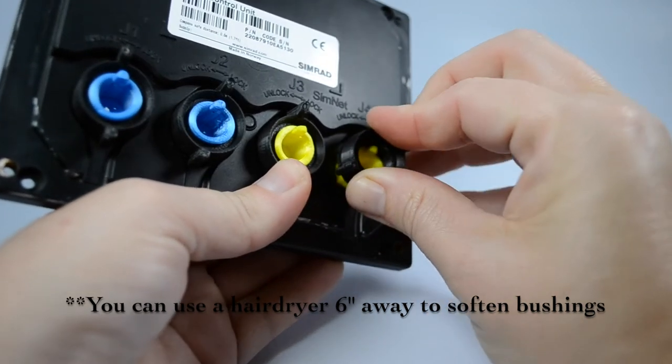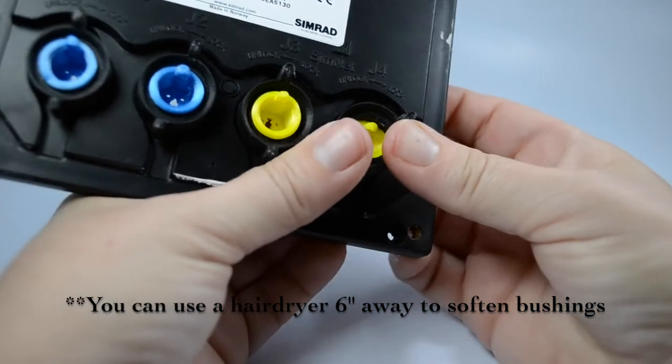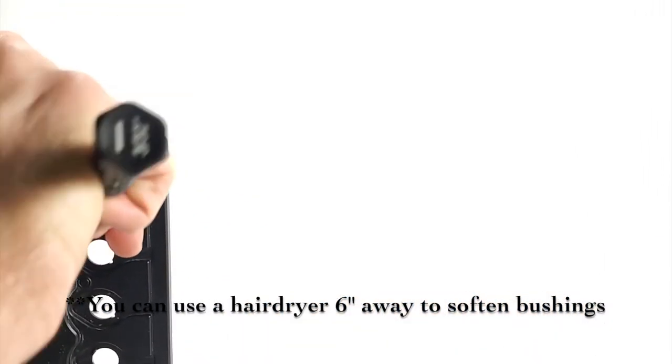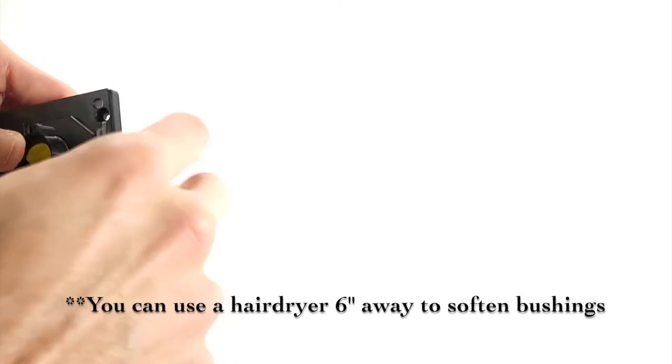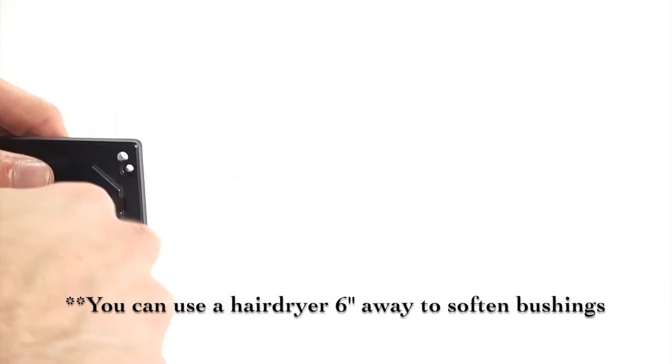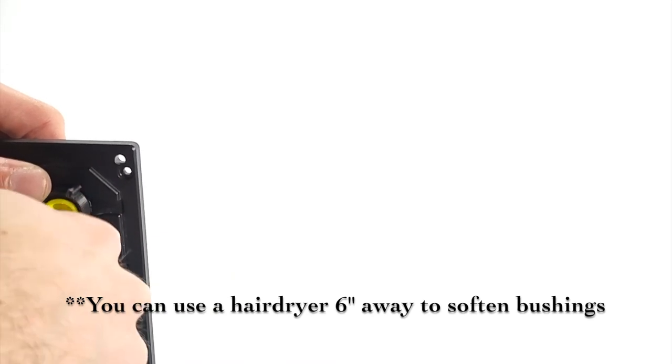Gently push the lock nut down onto the new bushing. While keeping the pressure on the back of the bushing, pinch the top and lightly twist the lock nut to work it onto the new bushing.